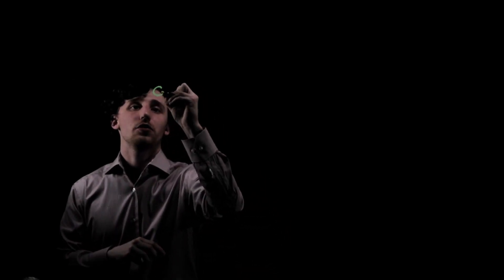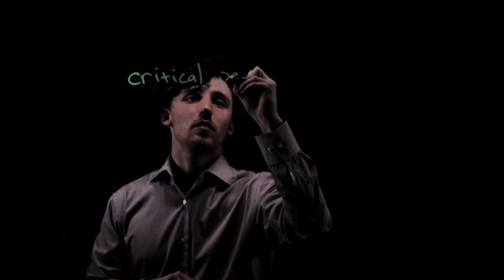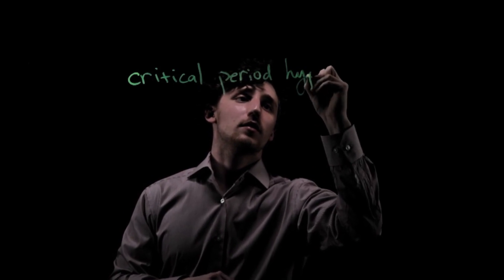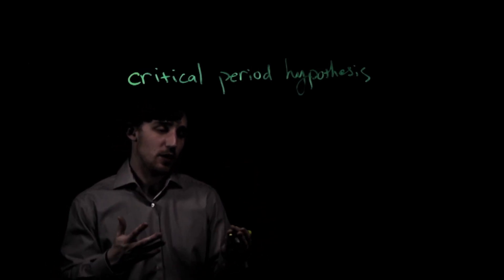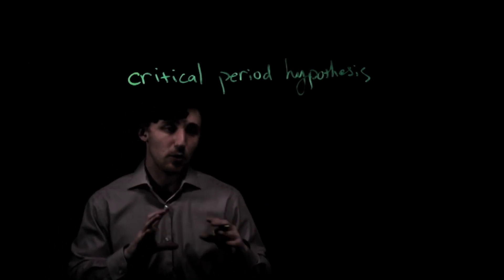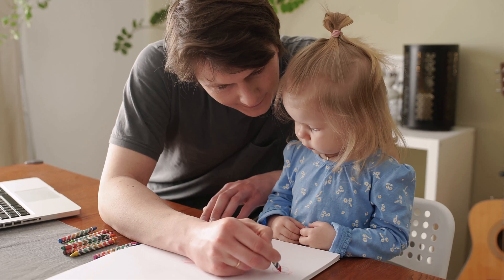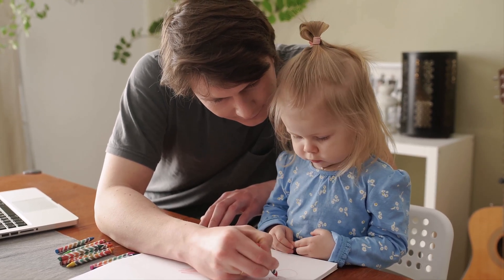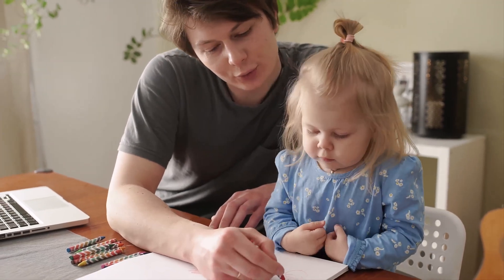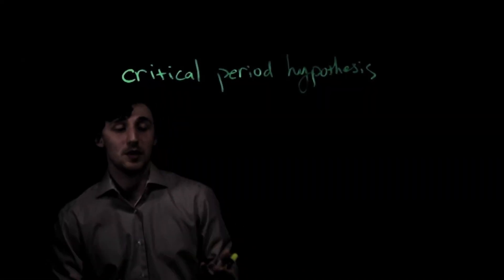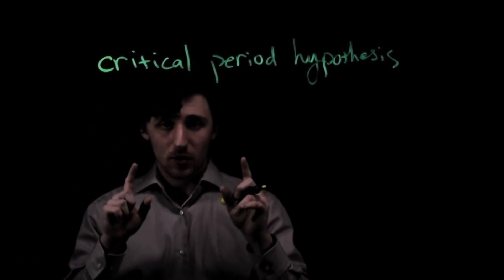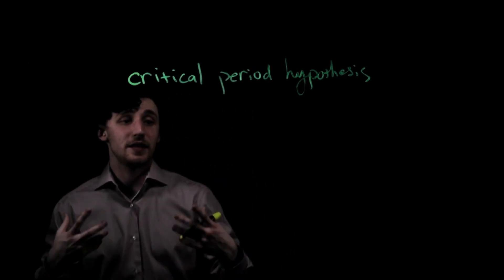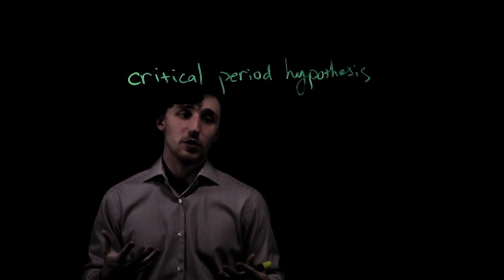We know children experience more neuroplasticity than adults but don't know exactly why. One hypothesis is the critical period hypothesis, which explains that as children we are exposed to huge amounts of information and experiences, and humans have adapted to rapidly take in and process information during critical periods of childhood, resulting in very high neuroplasticity. This remains a hypothesis but is one of the leading theories.